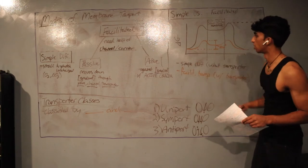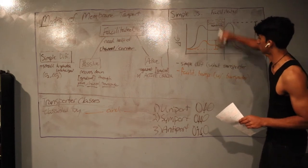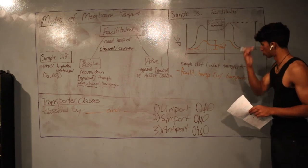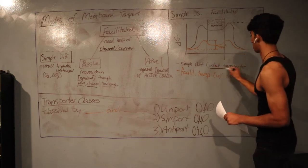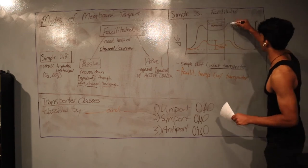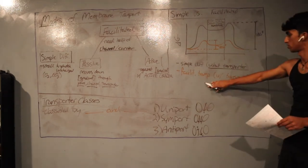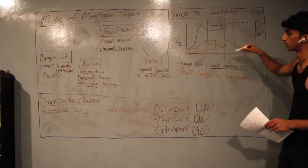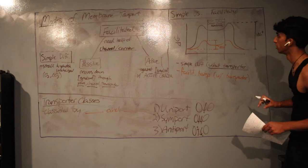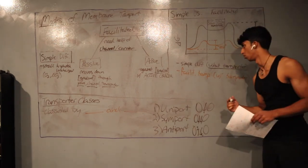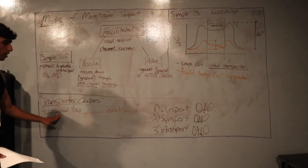On the free energy diagram comparing simple versus facilitated diffusion, the y-axis is delta G and the x-axis is the reaction coordinate from outside to inside the cell. Simple diffusion (the upper curve) has a very high activation energy barrier. Facilitated transport (the lower curve) has much less activation energy, showing how a transporter greatly lowers the barrier for crossing the membrane.